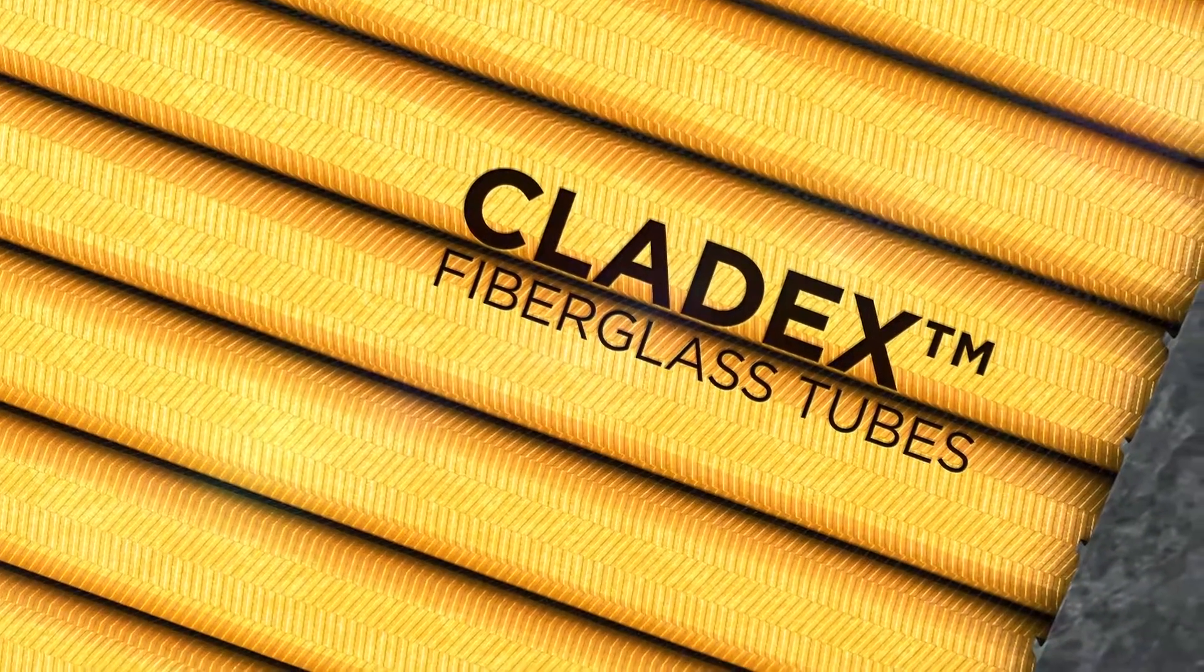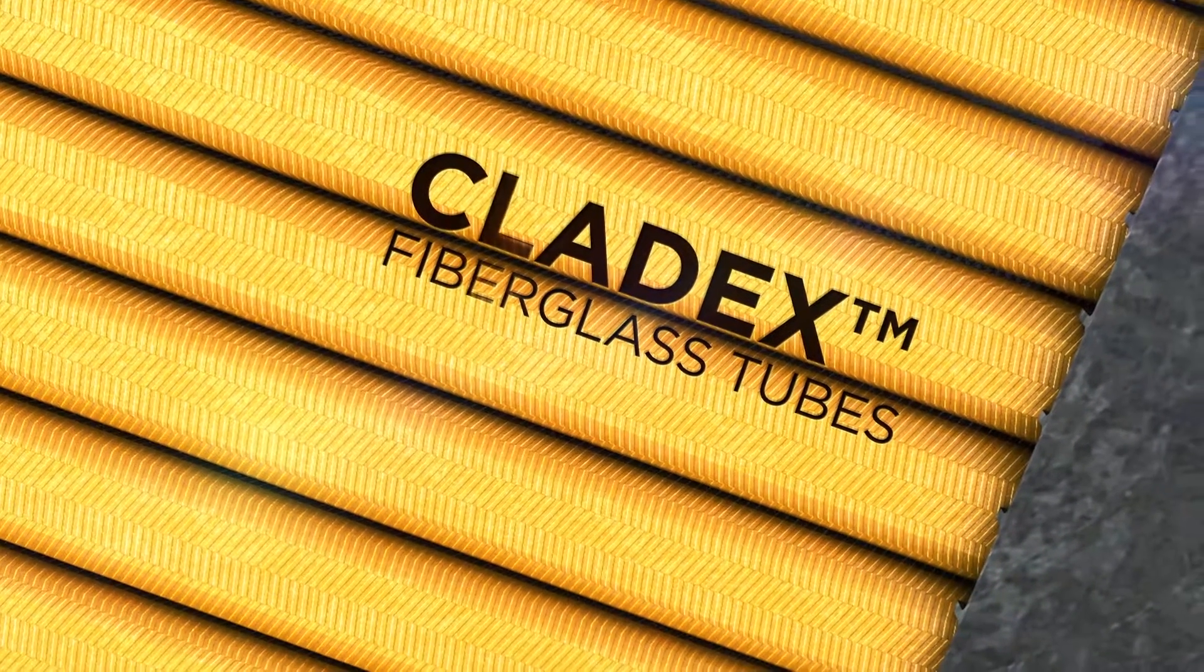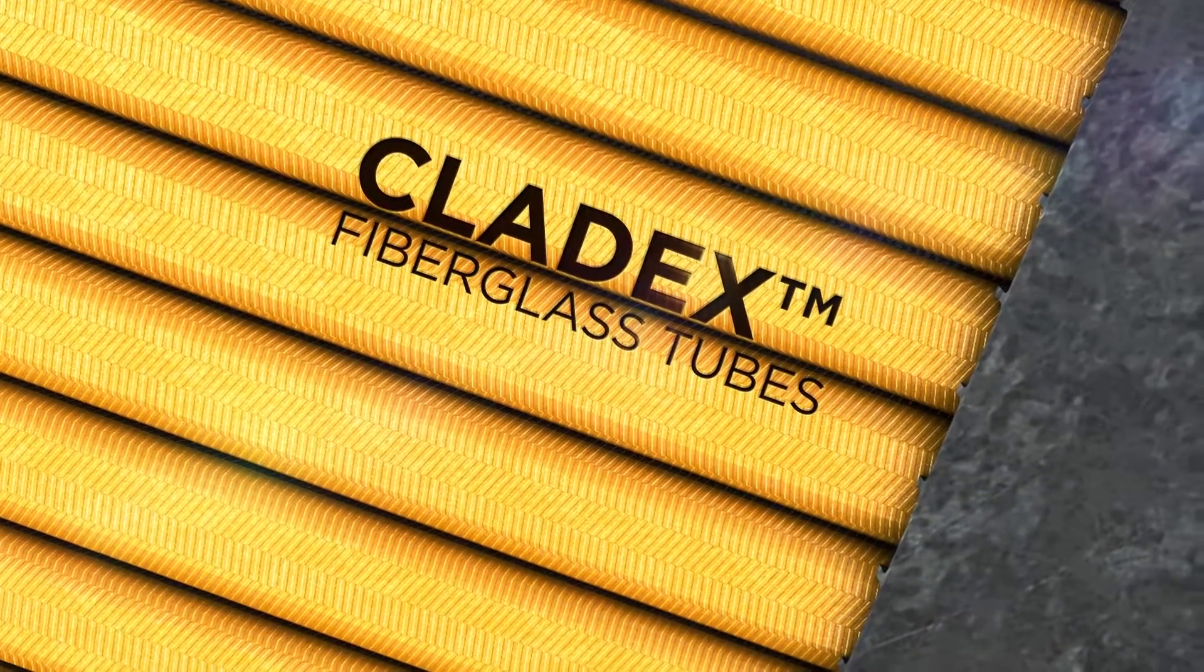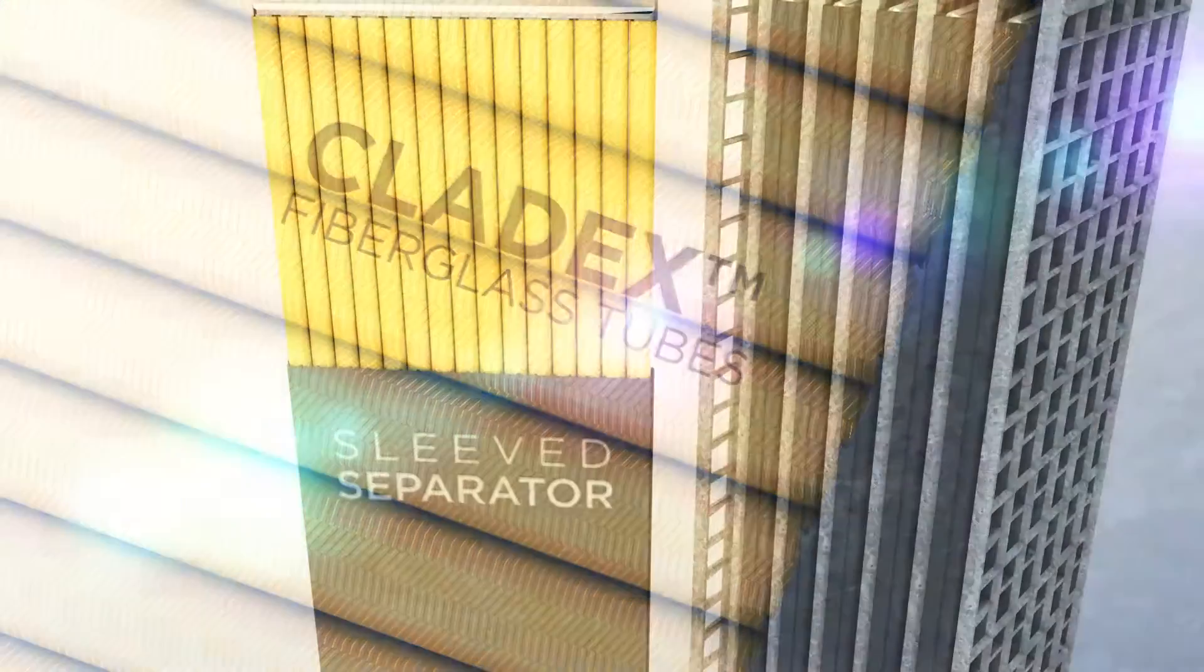Our cladex tubing is made from braided fiberglass, which is far more resistant to acid and temperature extremes than polyester tubing. The strength and rigidity of the tube ensures it retains its shape throughout the service life of the battery.